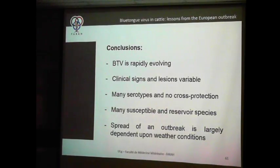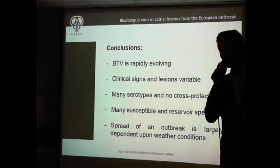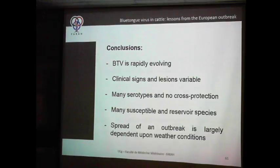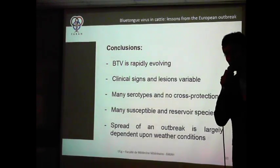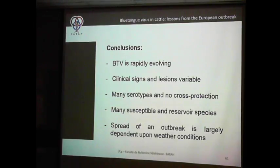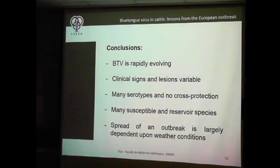In conclusion: BTV is rapidly evolving because it has a segmented genome and is an RNA virus with a fast evolution rate. The clinical lesions and signs can be highly variable and look like several diseases, including vesicular disease like foot-and-mouth disease — keep that in mind. There are many serotypes — probably more than 30 in the future — and there is no cross-protection between these serotypes.